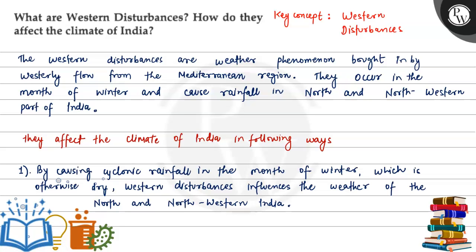Hello guys, let's see this question. This question says: what are western disturbances? How do they affect the climate of India? So this question asks about what western disturbances are and how they affect the Indian climate.